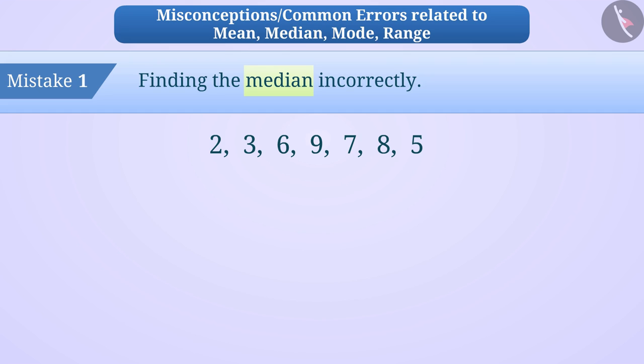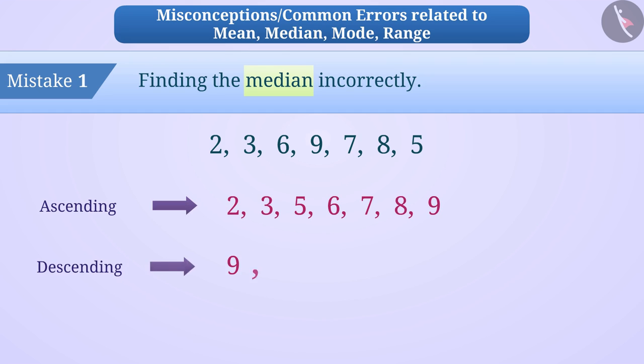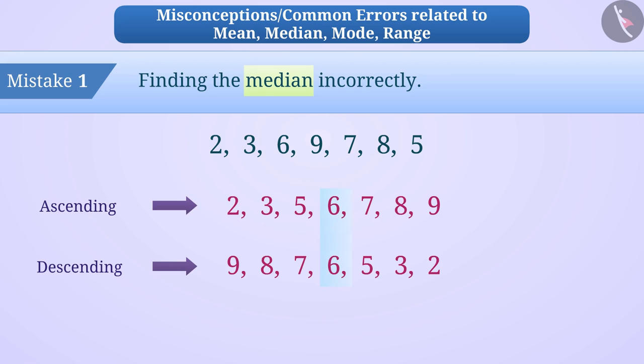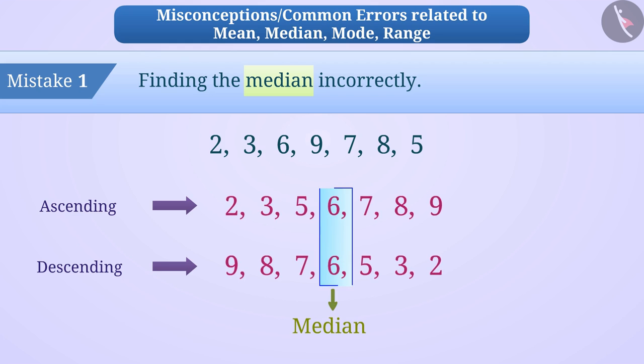Like here, the ascending and descending order will be shown. The middle term in the observation is the median. Hence, 6 will be the median.